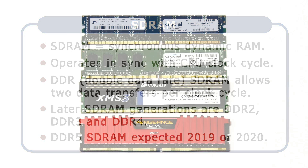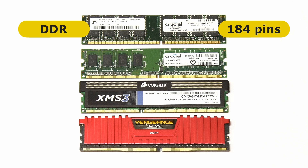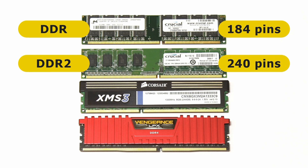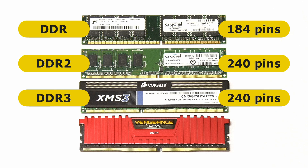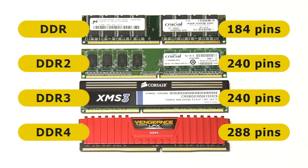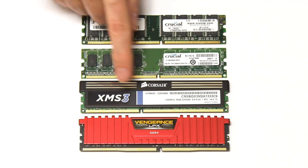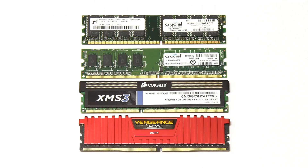Later generations of DDR SDRAM offer increasingly higher performance and have different physical form factors. At the top here we have a first generation full-size DDR SDRAM with 184 pins, and below that a DDR2 module with 240 pins. Next, there is a DDR3 SDRAM which also has 240 pins but which has a notch in a different location to prevent it from being inserted into a DDR2 socket. Finally, we have a DDR4 SDRAM with 288 pins and again a different notch configuration. Note that the DDR3 and DDR4 modules here are supplied with an aluminium heat spreader to help cool their chips, but that this is not always the case.